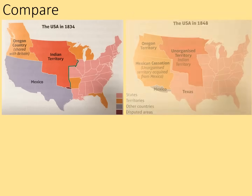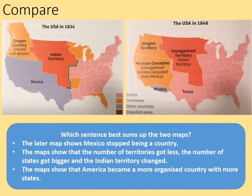Let's compare the two maps. Which of these statements best sums them up? First: the later map shows Mexico stopped being a country. Second: the map showed that the number of territories got less, the number of states got bigger, and the Indian territory changed. Third: the map showed that America became a more organized country with more states. The first bullet point is just wrong — Mexico didn't stop being a country. For the second, the number of territories did get less, the number of states got larger quite substantially, and the Indian territory changed subtly. The last one is sort of true as well, but the best fit is probably the middle one.